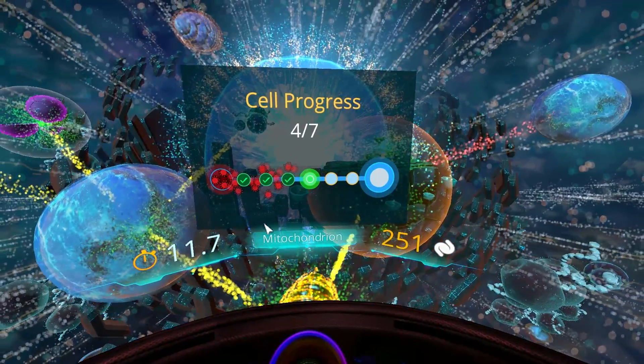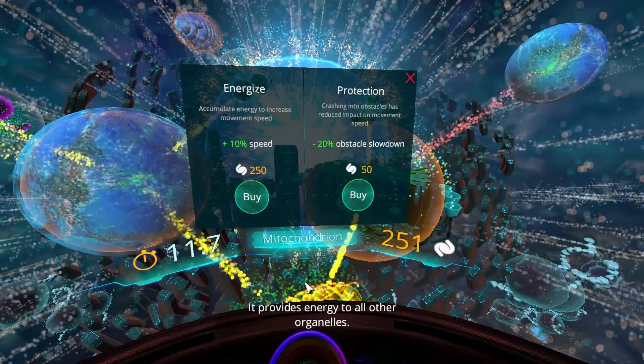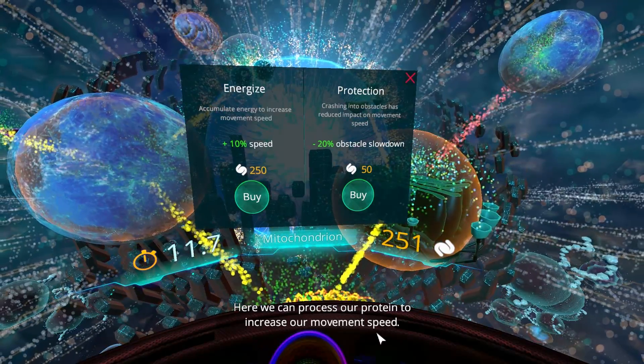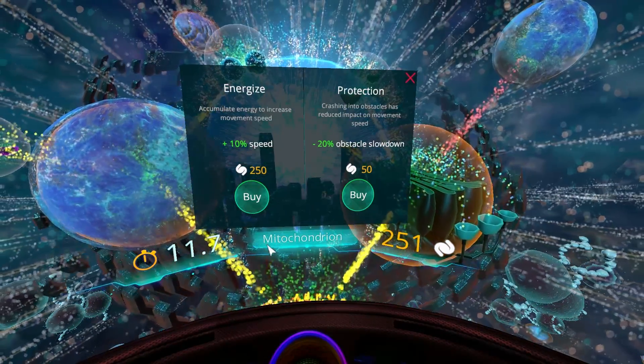I just have to click on mitochondrion. It's a standard organelle, it provides energy to all other organelles. Here we can process our protein to increase our movement speed. And there you go, so the lady just taught us what a mitochondrion was once we actually unlocked it.